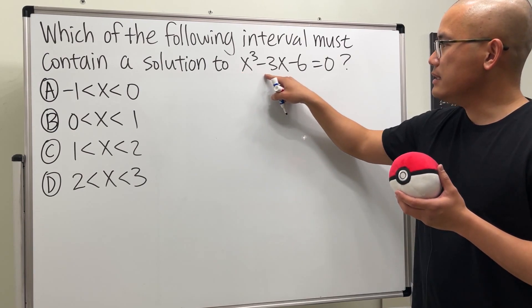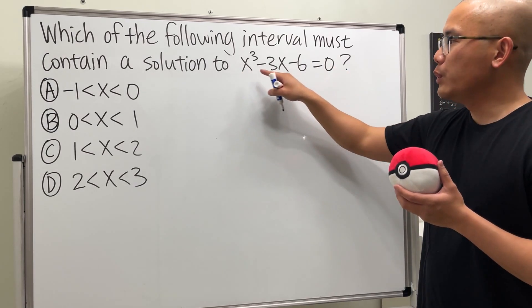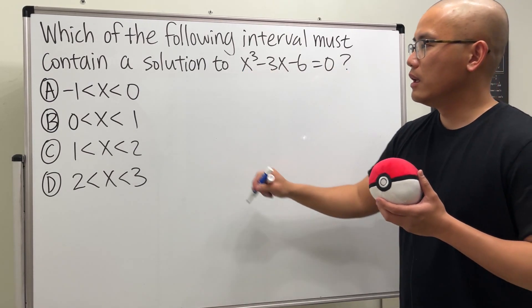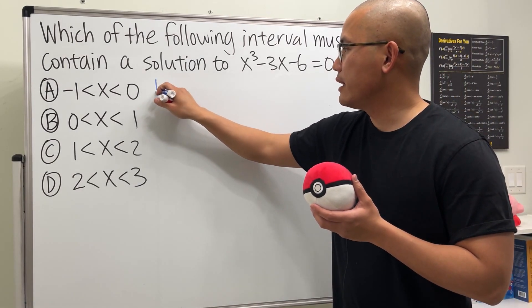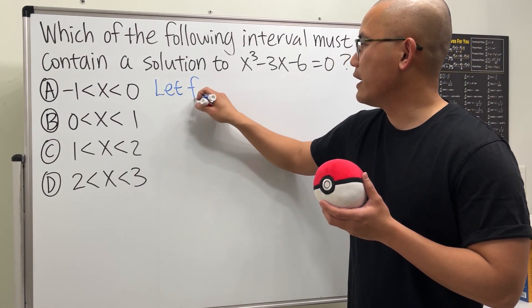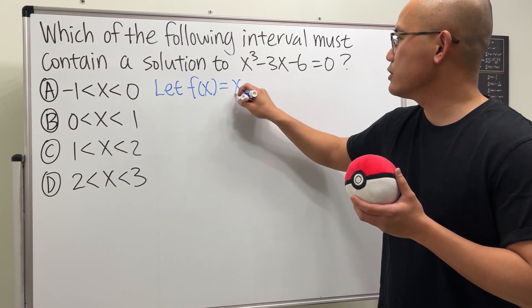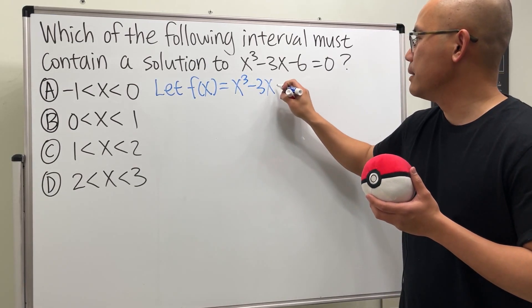First off, we see that this is equal to 0 already. So we can define this to be our function. I'm just going to be writing that down as that f(x) be x to the third power minus 3x minus 6.